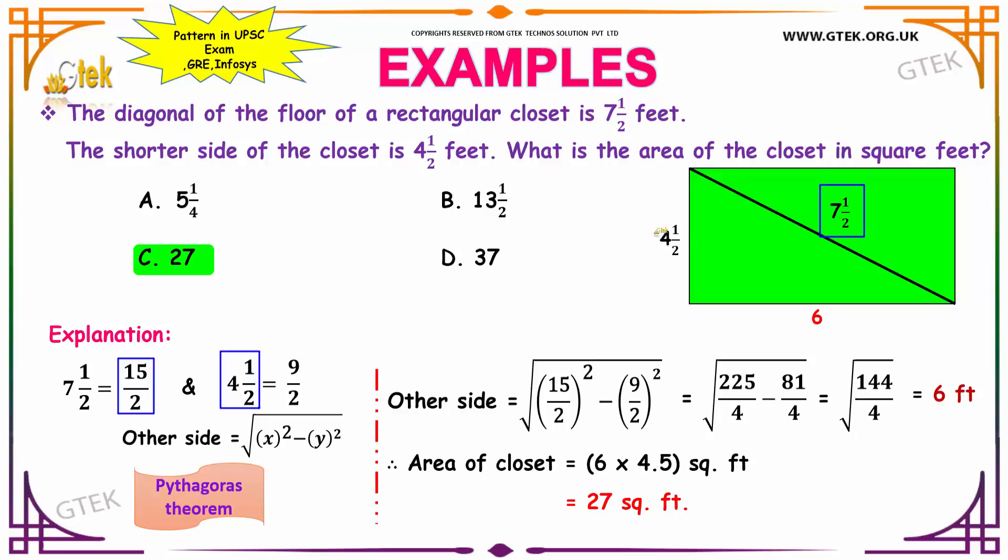A shorter side of the closet, that is, your breadth is 4.5 feet, which can be simplified as 9 by 2.